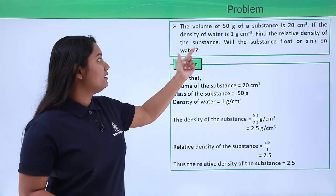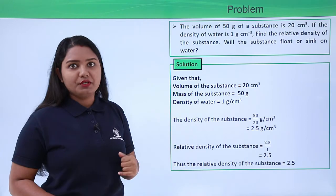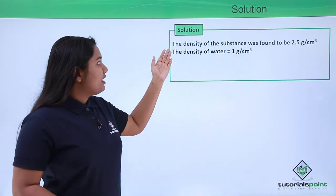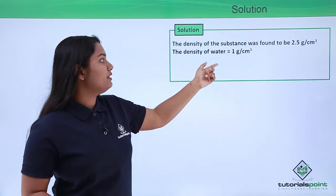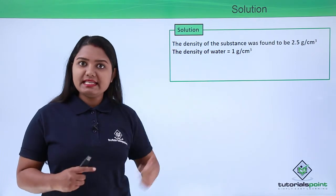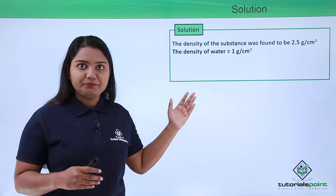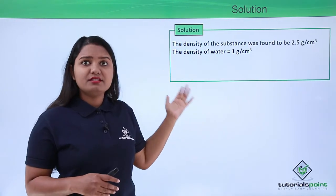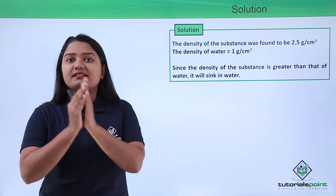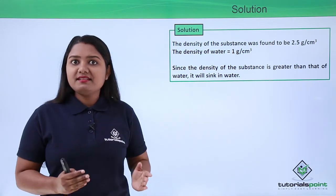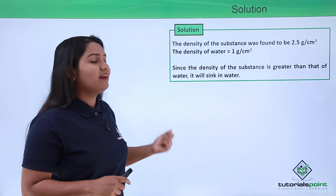Now we have found the relative density of the substance. We need to check if this substance will sink or float in water. The density of the substance is 2.5 grams per centimeter cube and the density of water is 1 gram per centimeter cube. Since the density of the substance is greater than the density of water, we know that the substance is bound to sink. So this substance will also sink in water.